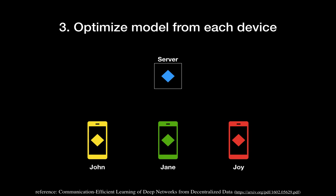Each device now trains using their local data. John has his data, Jane has her data, and Joey also has her own data. After the training, they have their own model updates — you can see the yellow diamond for John, the green diamond, and the red diamond there.